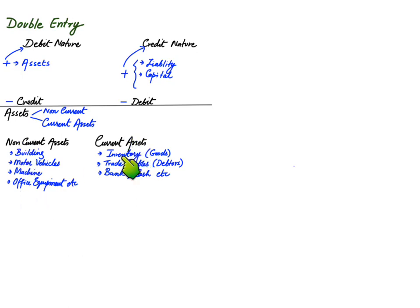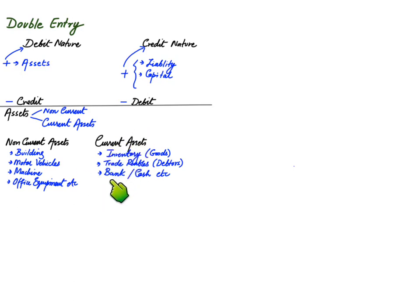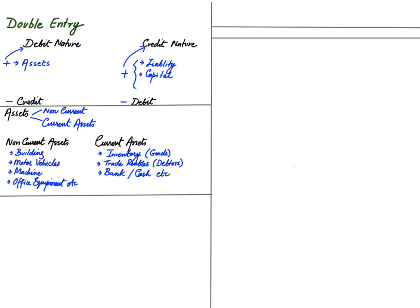Current assets such as stock and inventory are bought for resale, while non-current assets are bought for use rather than resale. Current assets change in value very often — we don't have an exact amount of cash or bank balance for a long period of time. Non-current assets are of a permanent nature because their value doesn't change very often.